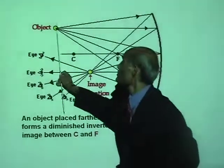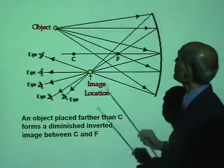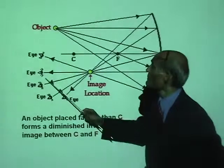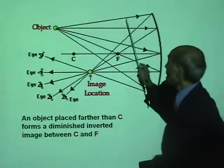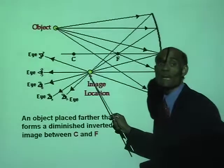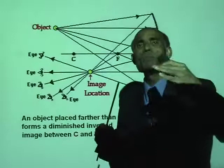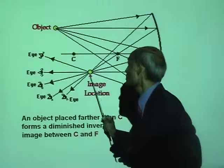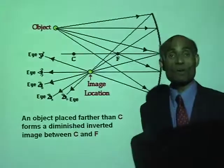The object is placed at a distance away from the center of curvature. Where is the image going to be formed? The image is going to be formed here — when you look from anywhere here, all these light rays after reflection will appear to be coming from this point. The point where the reflected rays meet is where the image is formed.